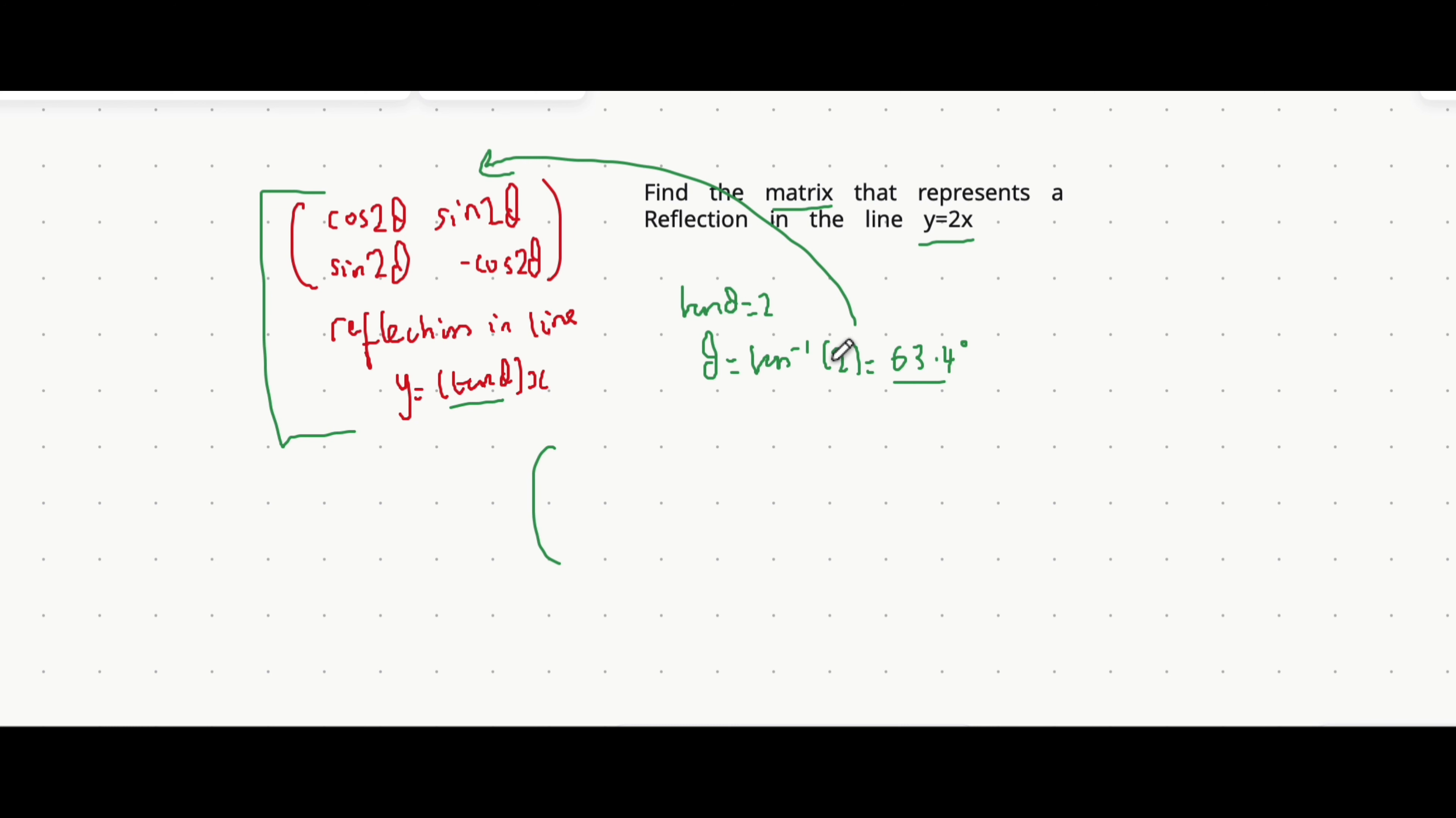So in our case, we do cos of 2 theta, which would actually be minus 3 fifths. We do sin of 2 theta, which would actually be 4 fifths. That repeats here, and then here we do minus cos of 2 theta, which is just a positive 3 fifths now.